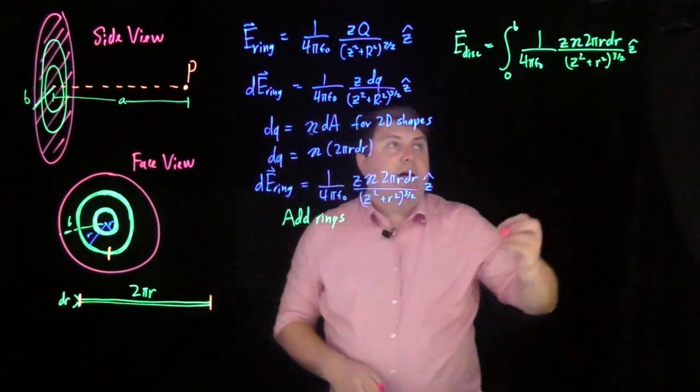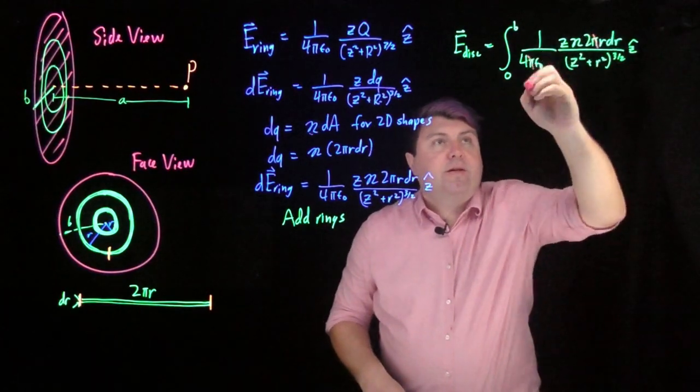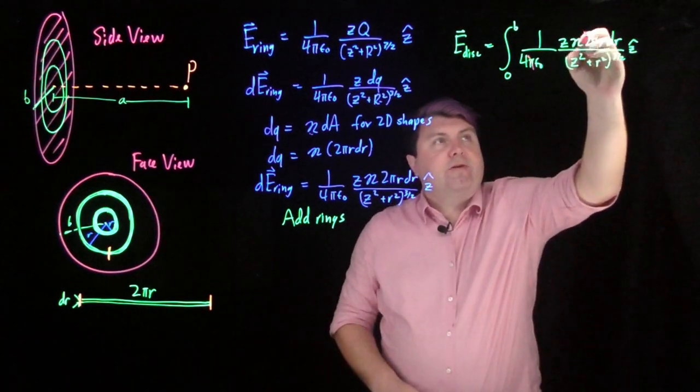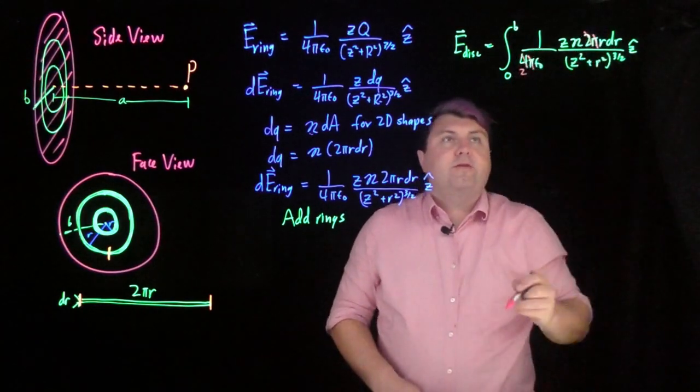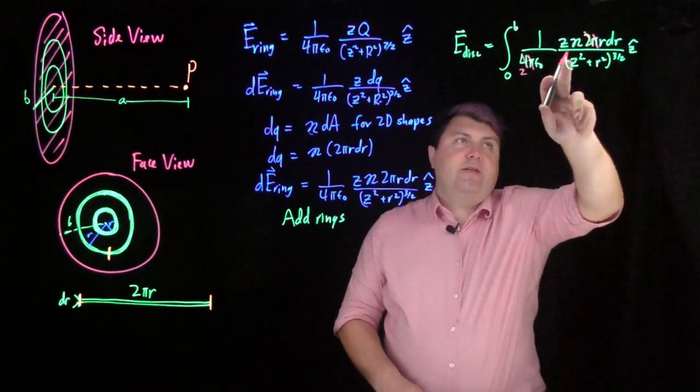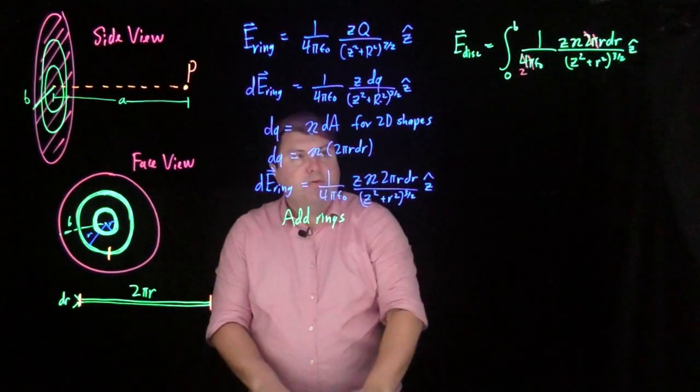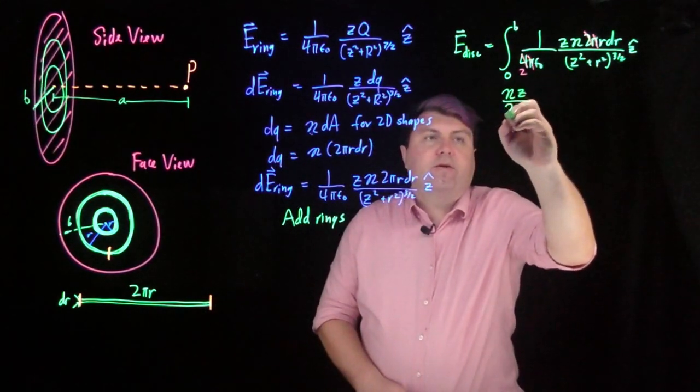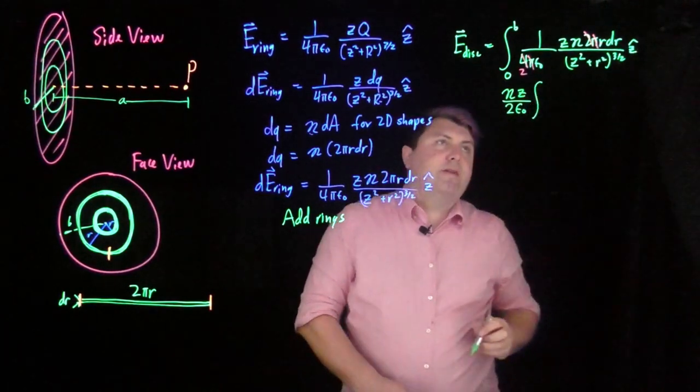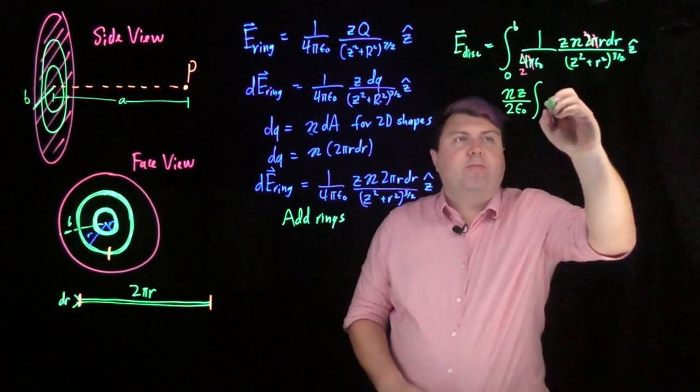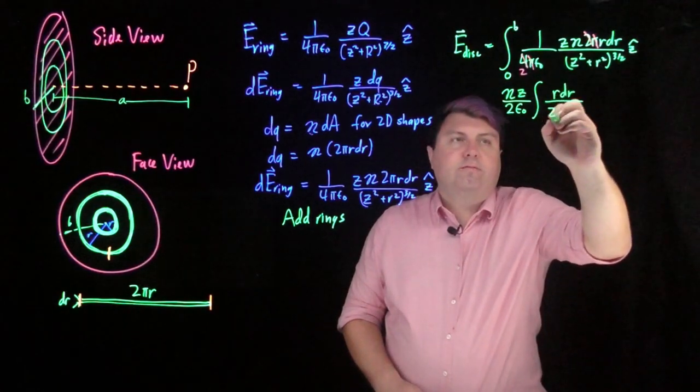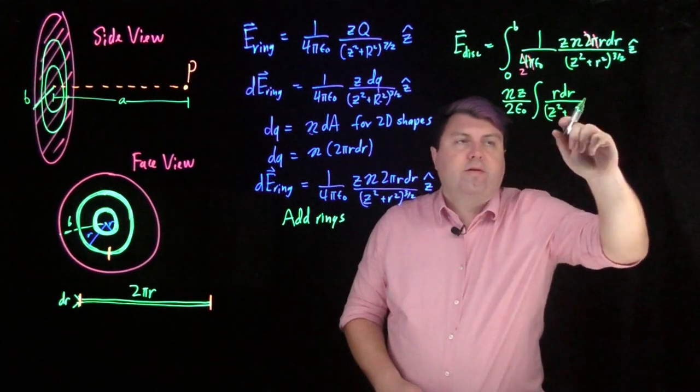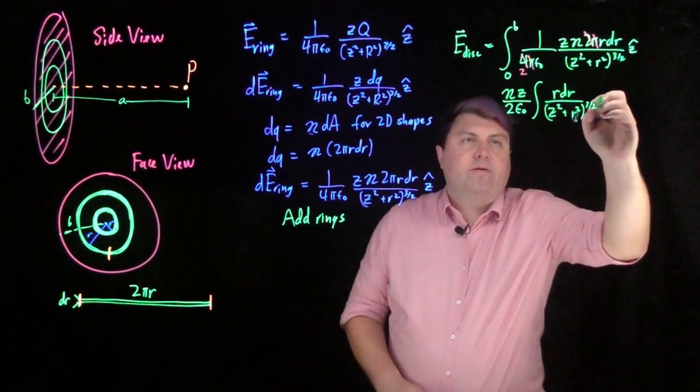So we will get quite a bit of simplification very soon: z eta 2 pi r dr over z squared plus r squared to the 3 halves z hat. First thing we can do is we can cancel these pi's out nicely enough, and then we can also pull out other things. We can cancel the 2 before leaving the 2. This 2, this epsilon naught, this z, this eta, none of them depend upon r, so we can pull them out of the integral. So we have eta z over 2 epsilon naught, and now we have this integral of just a little bit less: r dr over z squared plus r squared to the 3 halves.